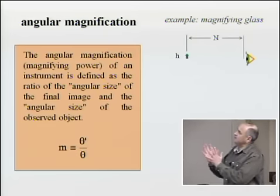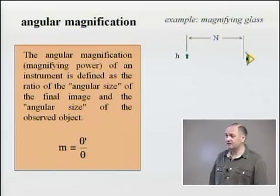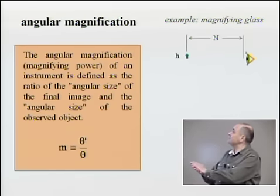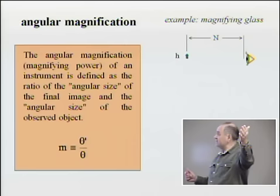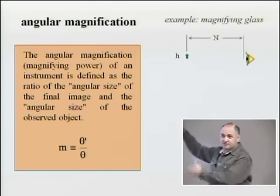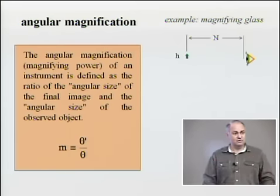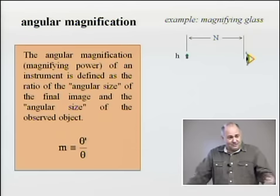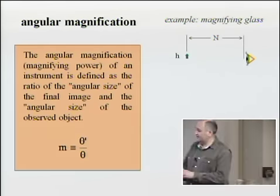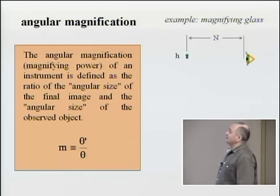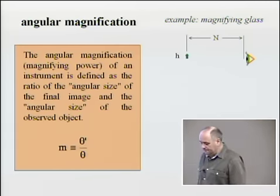Angular magnification is more useful when we use optical instruments to characterize them, whereas linear magnification is used in situations like projecting a slide on a screen. But if we use an instrument to observe and magnify an object, angular magnification is much more useful. As an example, let's look at how a magnifying glass works and what kind of magnification we can expect from it.